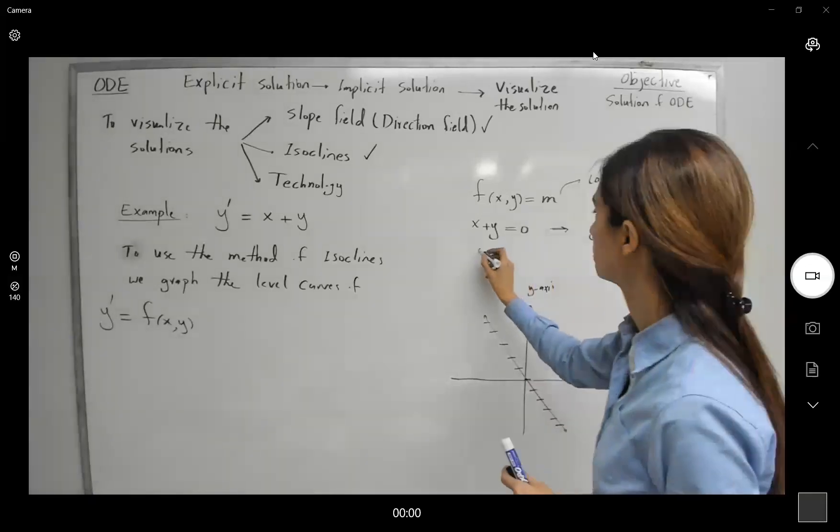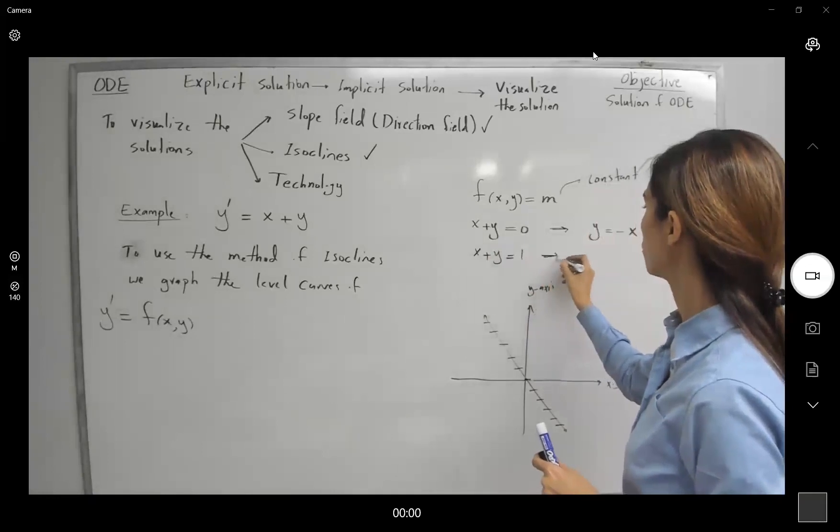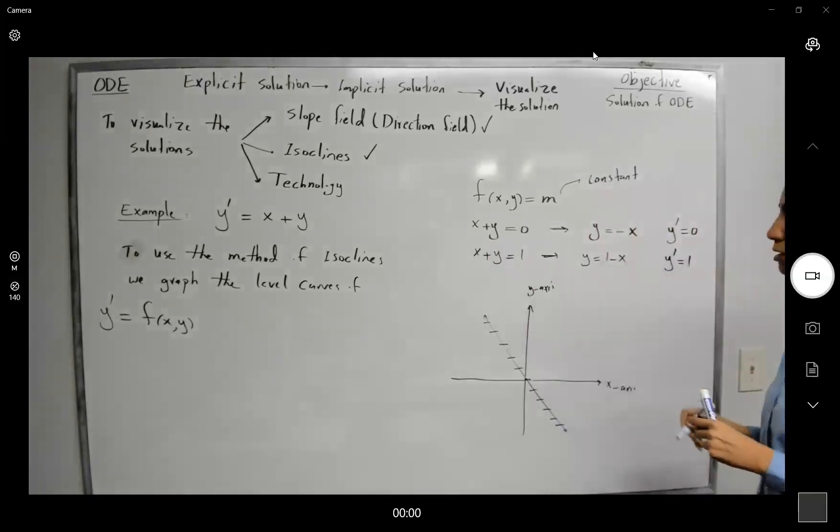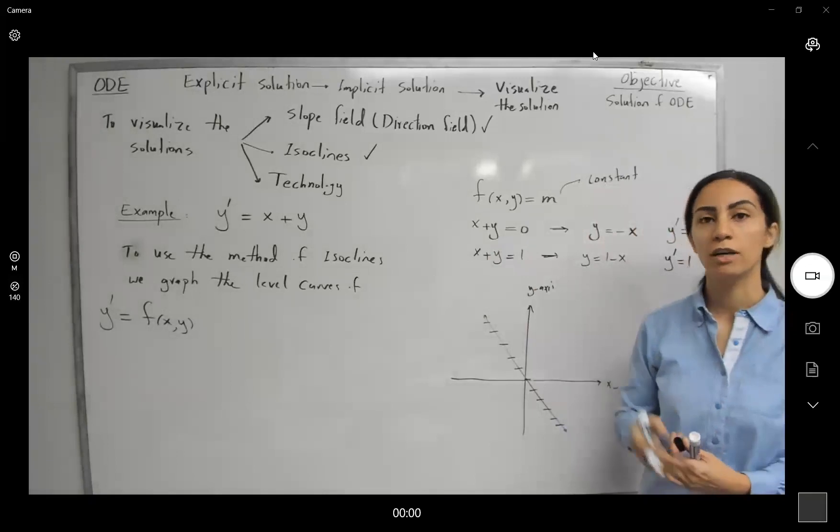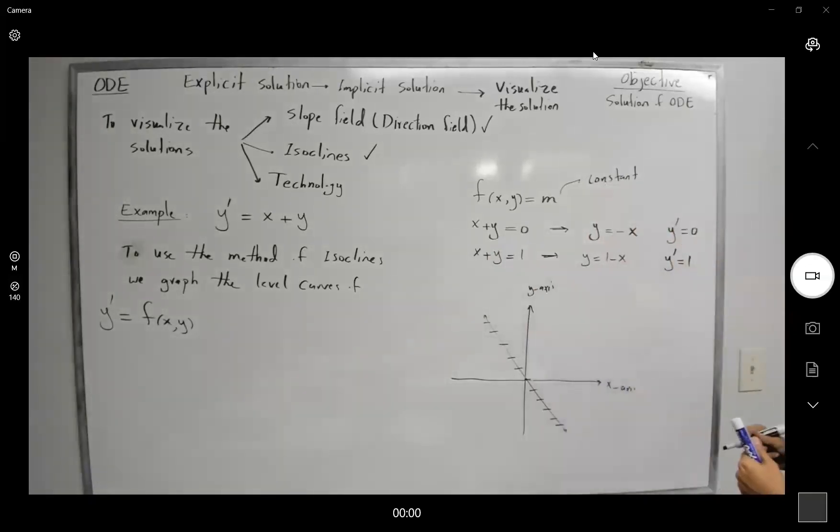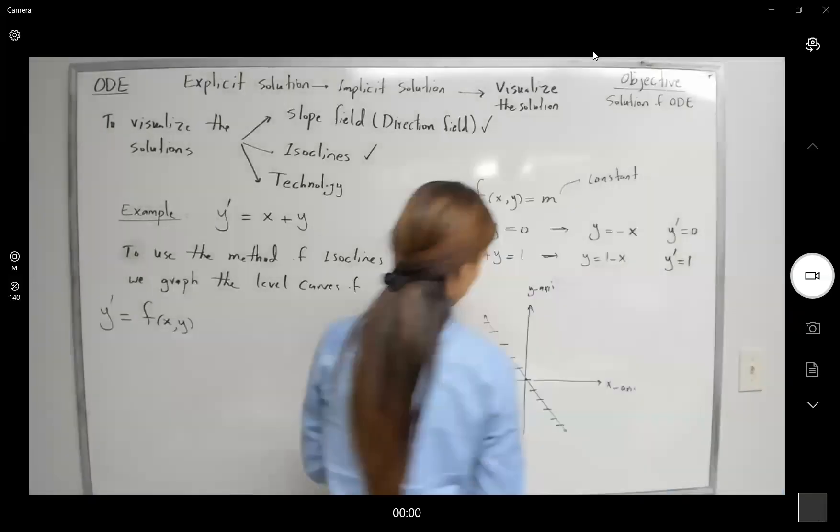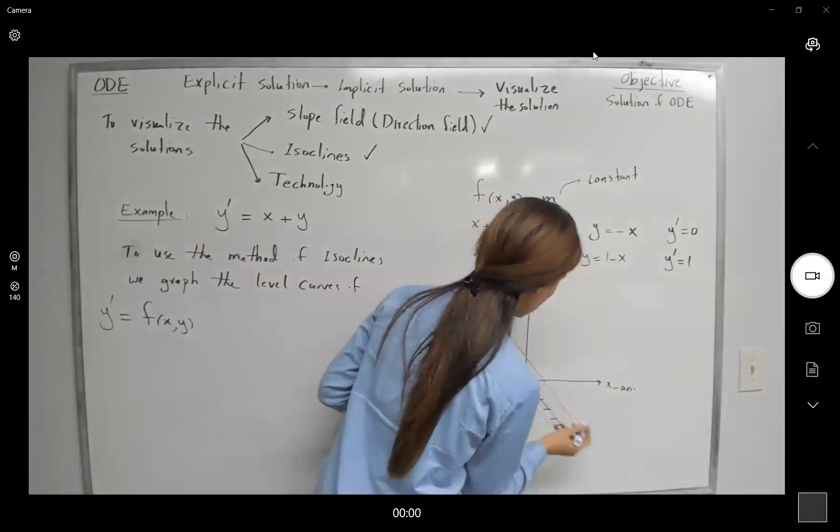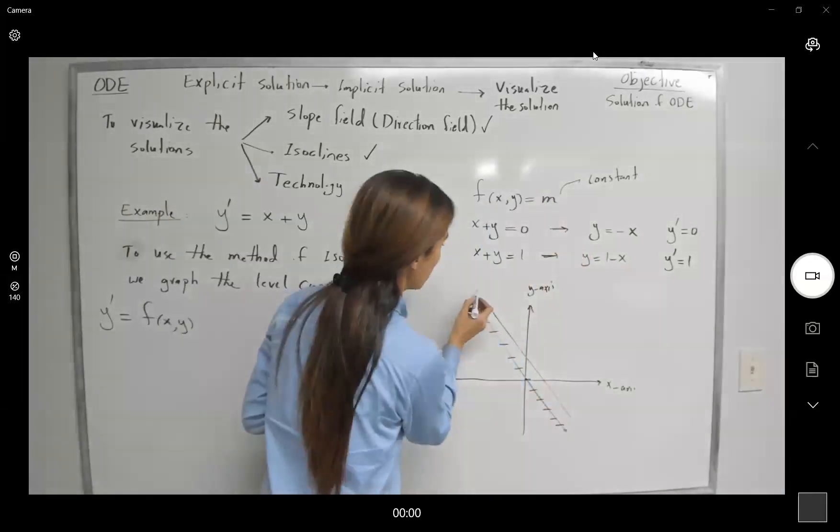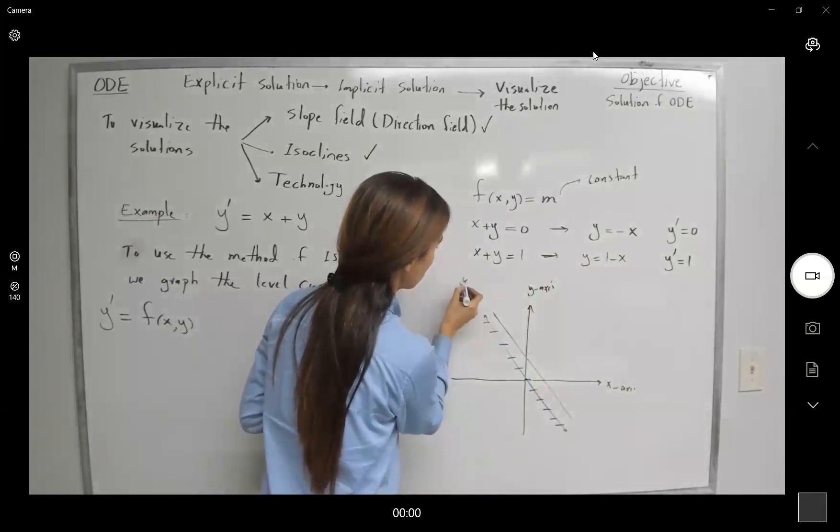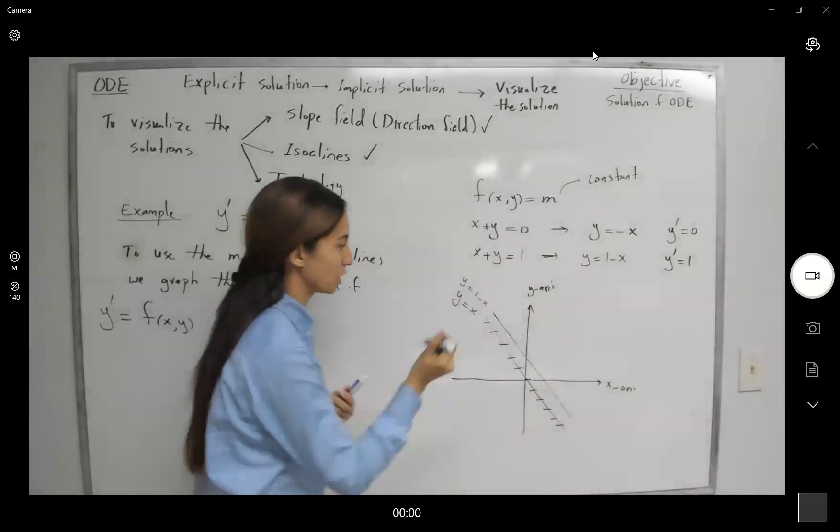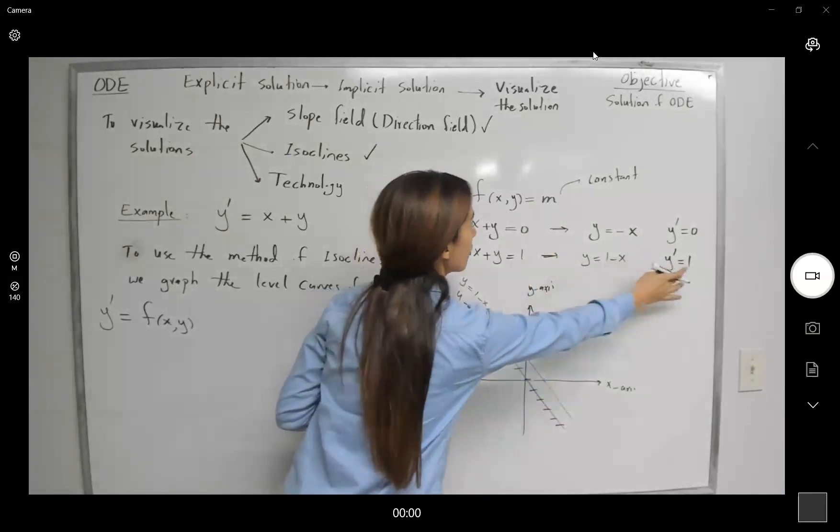What if we set it equal to 1? X plus y is equal to 1. So y is equal to 1 minus x. So it means that the derivative is equal to 1. It means that you have a collection, a set of increasing small line segments. They are located on this line y equals to 1 minus x. This is our line here. This is y equals to negative x and this is y equals to 1 minus x.